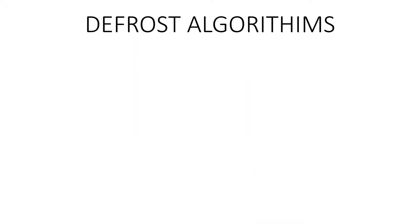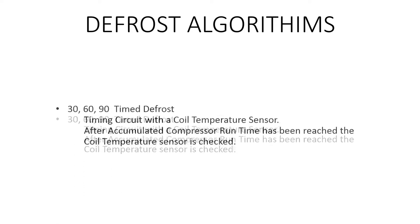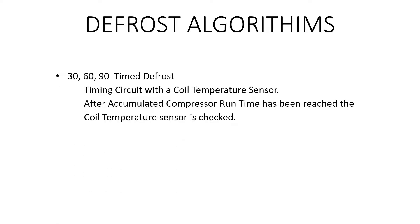There are basically two defrost algorithms used on most modern heat pumps. The first is a timed defrost: a timing circuit with a coil temperature sensor checks the coil temperature after the accumulated compressor run time has been reached. If the coil needs to be defrosted, it will go into defrost. If defrost is not needed, it will reset the timer and go around for another timed circuit.